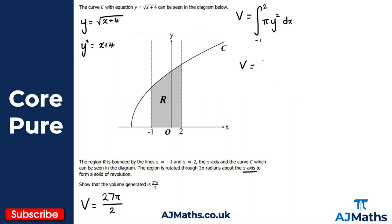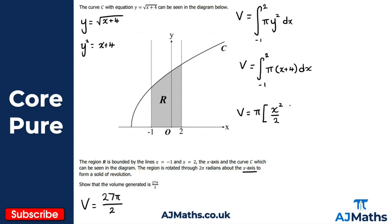Putting it all together: V equals the integral of π(x + 4) dx, with limits -1 to 2. I'm going to apply linearity and take π out in front, so V equals π times the integral of (x + 4) dx. Integrating term by term: x integrates to x²/2, and 4 integrates to 4x. Don't forget the limits: lower limit minus one, upper limit two.